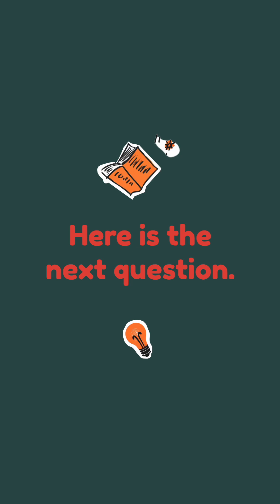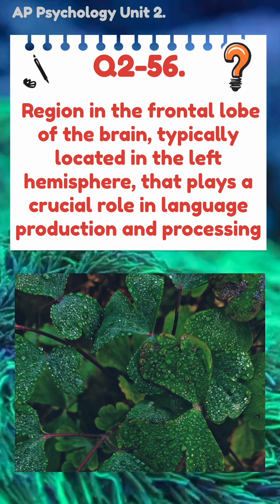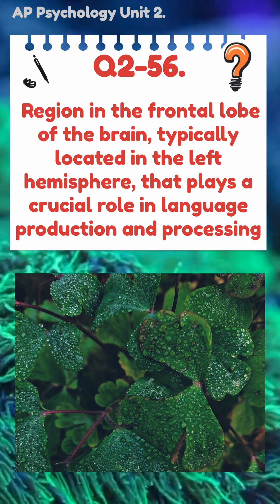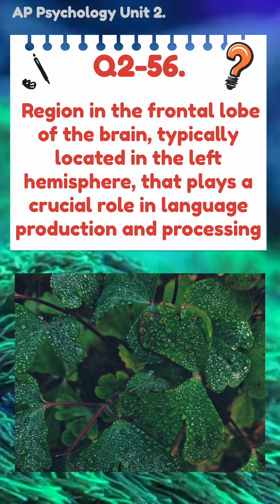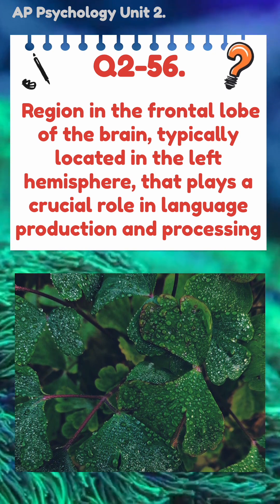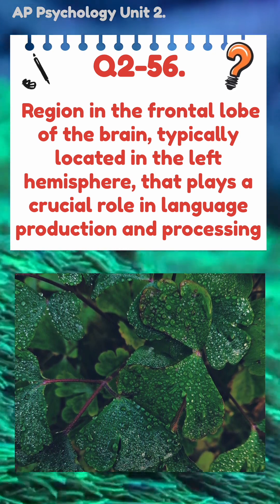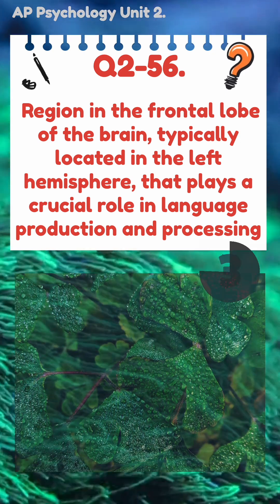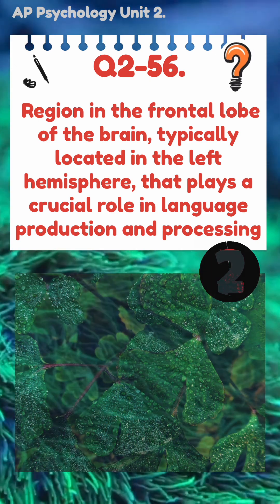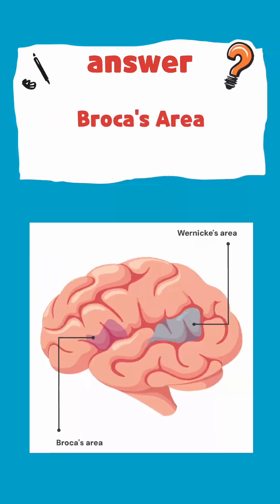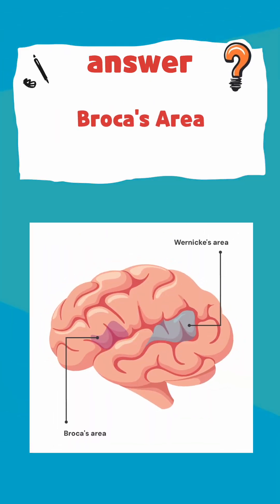Here's the next question. Region in the frontal lobe of the brain, typically located in the left hemisphere, that plays a crucial role in language production and processing. The answer is Broca's area.